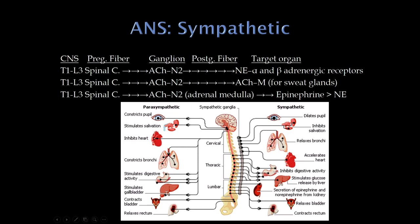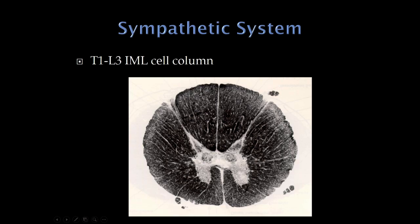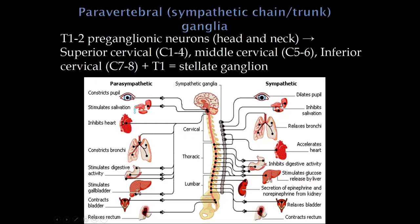The sympathetic preganglionic neurons are located throughout the thoracic cord and into the upper lumbar cord. They have a very distinct location in what's called the intermediolateral cell column — this is the gray matter of the spinal cord, and the sympathetics are in this intermediate-lateral portion. We can identify those neurons in the thoracic and upper lumbar cord as the preganglionic neurons.